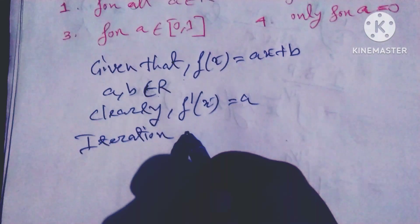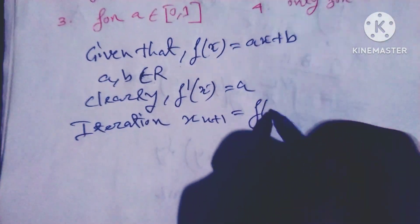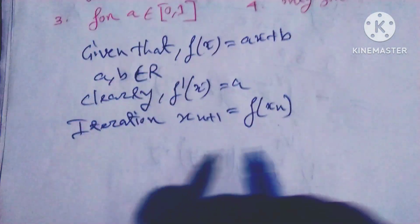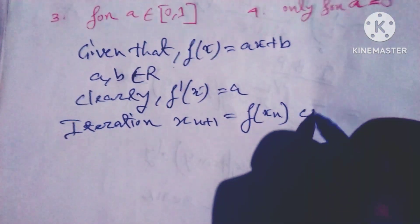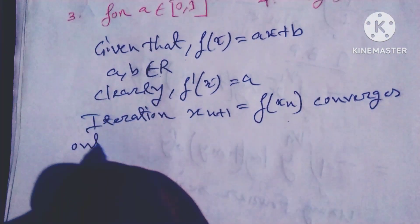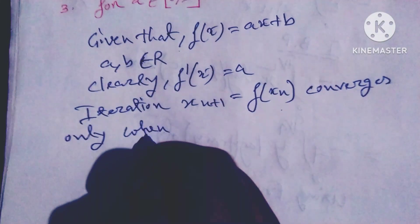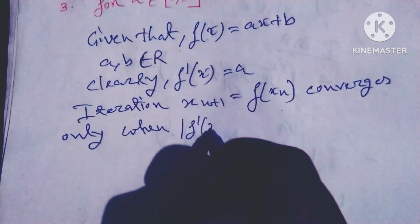The iteration method x_{n+1} = f(x_n) converges only when |f'(x_n)| < 1...